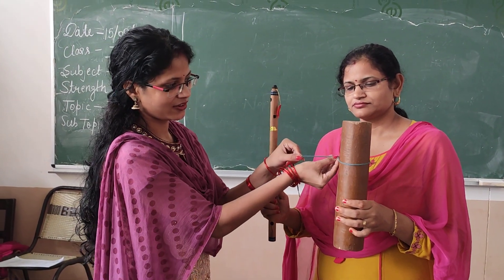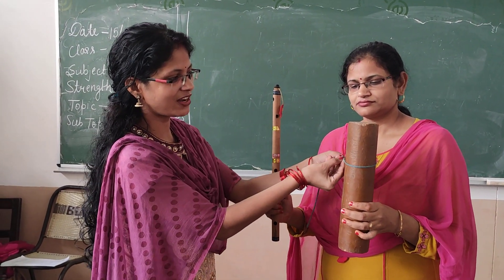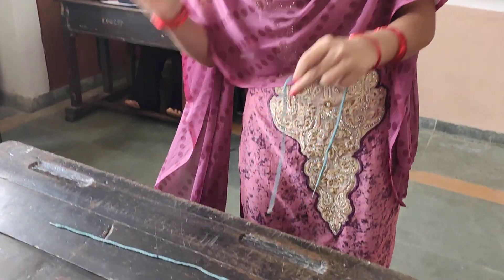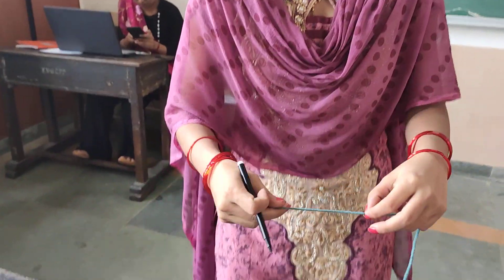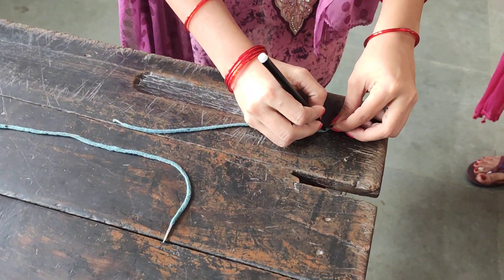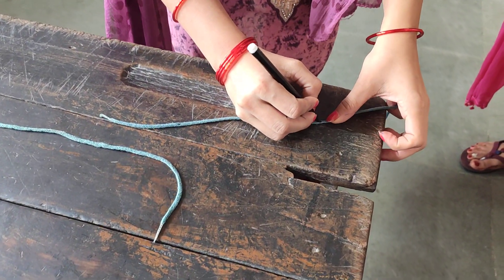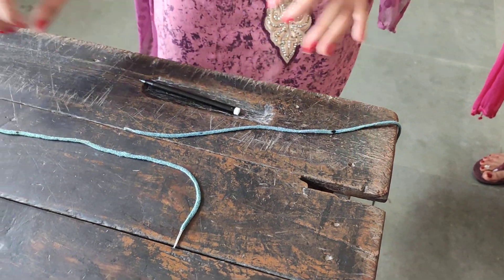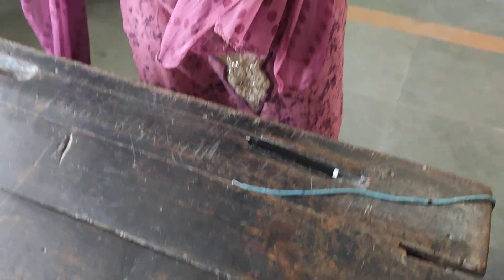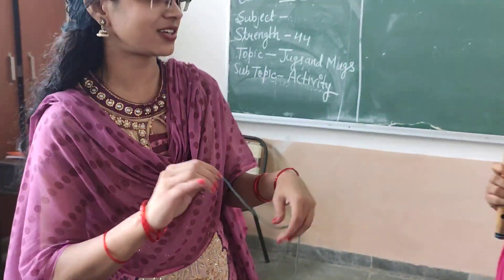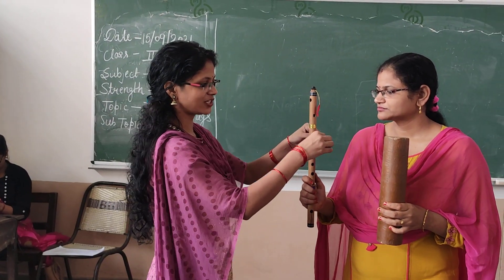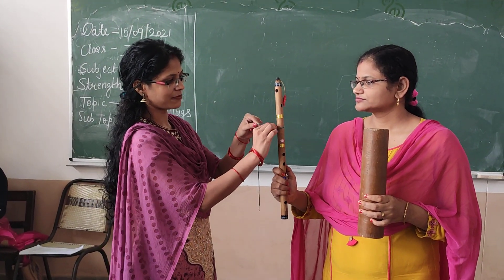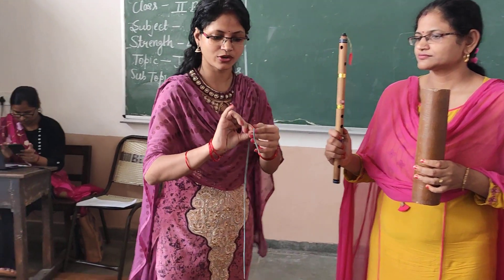Here I will mark one point by using this marker. So I am marking the point. Now take this another thread and measure the thickness of this flute and mark the point here also.